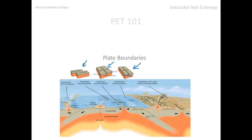In the case of one crust moving underneath another, we get an example like this. In the case of two plates spreading apart, we get an example like this. When we've got some sort of lateral motion, you might end up with something like this. They're depicted as moving apart here, but we could just as easily find that they're moving laterally with one another as well.